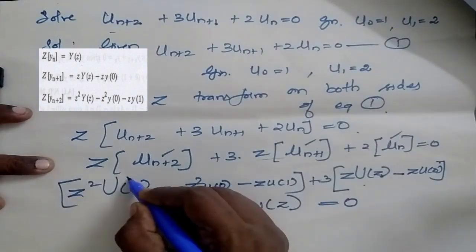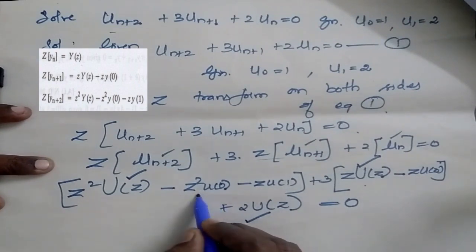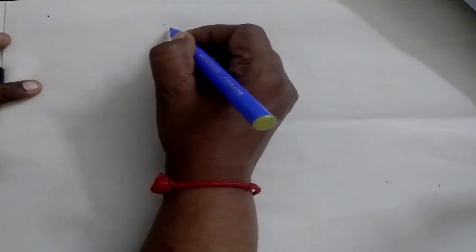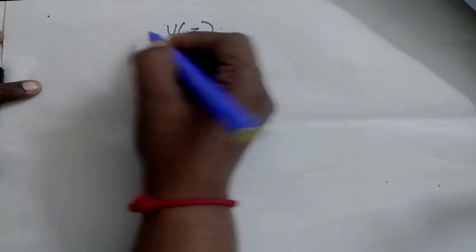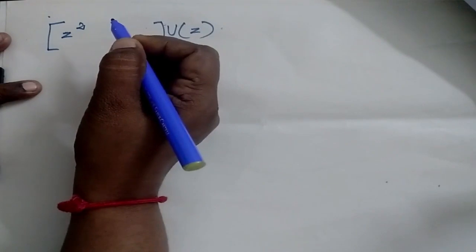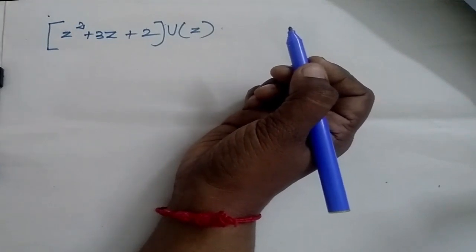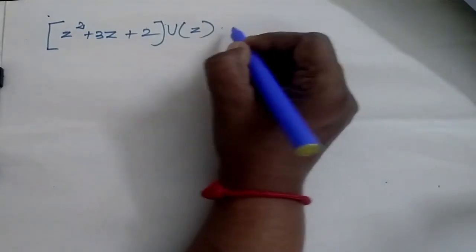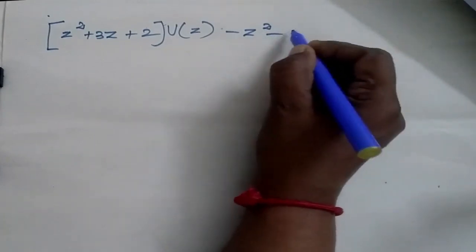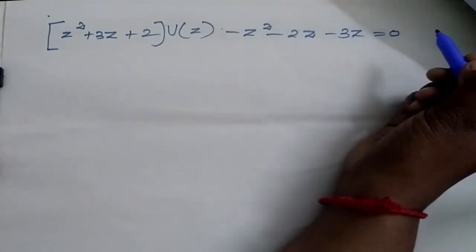Now I am going to combine all U(z) terms together, and I am going to substitute for u0, u1, and u0. So when I take U(z) commonly outside, I will be getting z squared plus 3z plus 2. Then my u0 is 1, so I will be getting minus z squared. Then u1 is 2, so minus 2z. Minus 3z, which is equal to z.